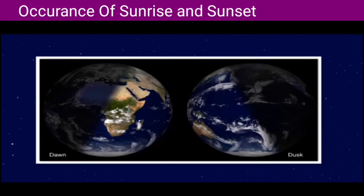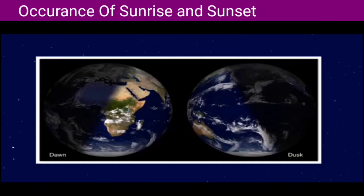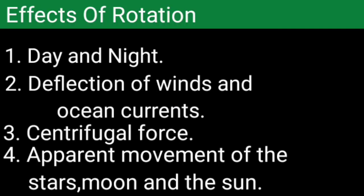The circle of illumination also represents the dawn and dusk times — dawn means the time of sunrise and dusk means the time of sunset. When Africa is having dawn at sunrise, at the same time somewhere over the Pacific Ocean the Sun will be setting, and at that time India will be having its noon, meaning the Sun will be overhead in the Indian region.